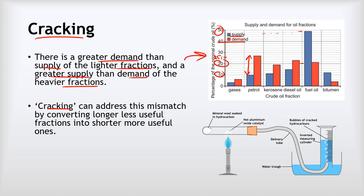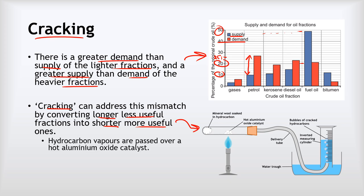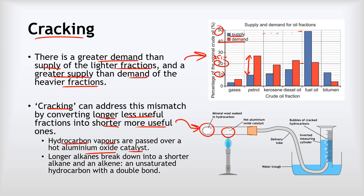In cracking, what happens is we convert longer, less useful fractions into shorter, more useful ones. We take hot hydrocarbon vapors and pass them over an aluminium oxide catalyst. Here we've got some mineral wool soaked in our hydrocarbon, and here we've got the catalyst being strongly heated by a Bunsen burner flame. What that does is cause a longer alkane to break down into a shorter alkane and an alkene. This is a really useful process because by cracking we can take the excess fuel oil that we don't really want and convert it into the more useful fractions that we have a greater demand for.